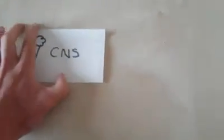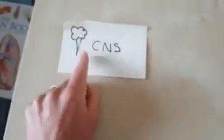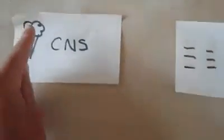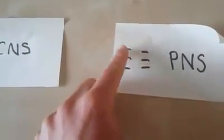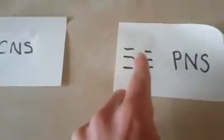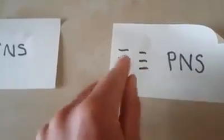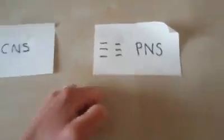First, on this post-it note, you have your central nervous system — and no, that is not an ice cream cone, that is the brain and the spinal cord. That's what makes up your central nervous system. Then we have the peripheral nervous system, which is a totally separate system. Imagine the brain and spinal cord are still on the image — the peripheral nervous system is all the nerves that come off of that, going down into our arms, hands, and feet.